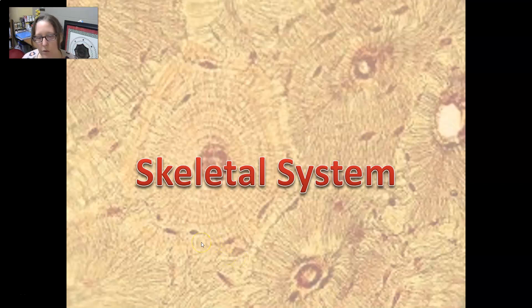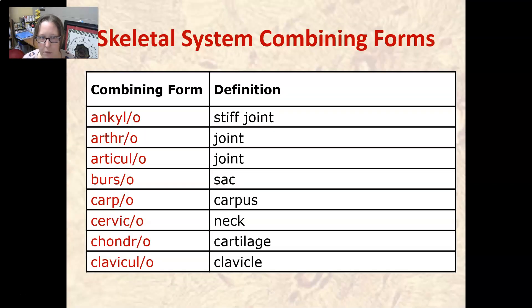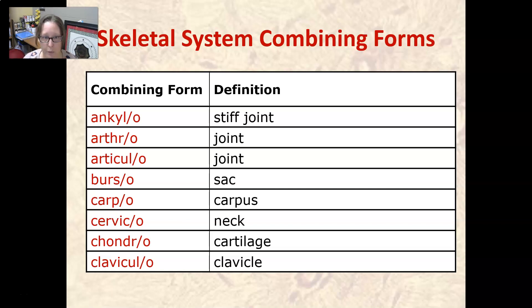Hi, this is Dr. A. Let's go over the word parts of the skeletal system. We'll start with the combining forms. Ankylo means stiff joint — the best memory aid is ankylosing spondylitis, a medical condition we'll cover in the pathology video. Arthro means joint, think arthritis with stiff joints. Articulo also means joint; another word for joint is an articulation, and that's where articular comes from.